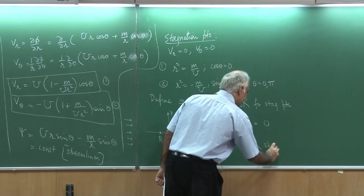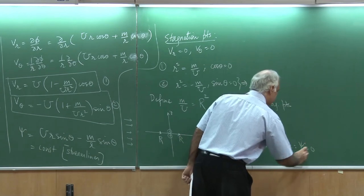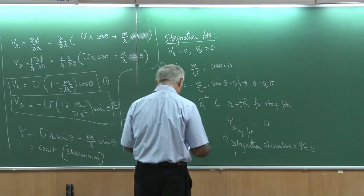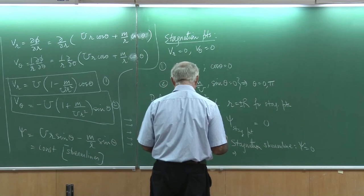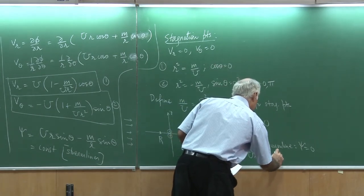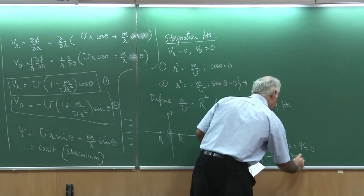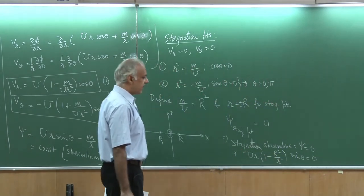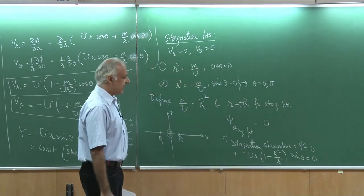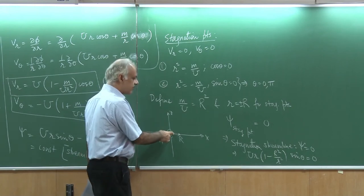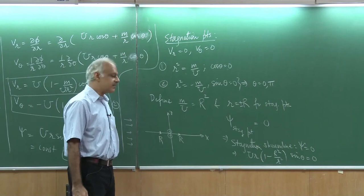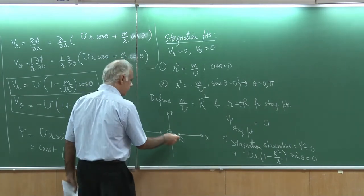To get the stagnation streamline, I put psi equals 0, which means I need to set the stream function equal to 0. That gives u times r times (1 minus R squared over r squared) times sine theta equals 0. If I evaluate this function, I get the stagnation streamline. I can take a particular value of r and evaluate the theta at which this is satisfied, or take different values of theta and find the corresponding r.